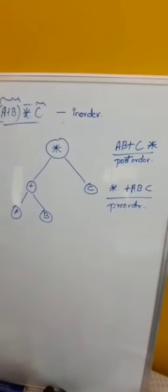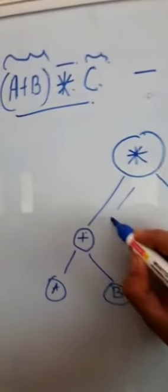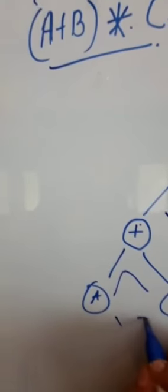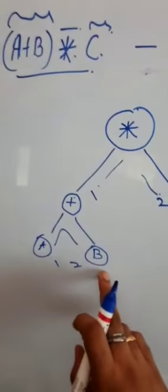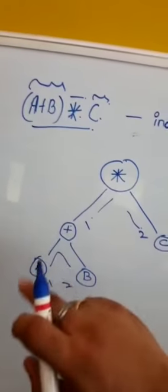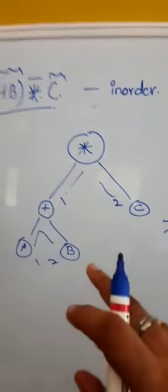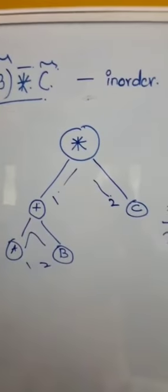To summarize: in all traversals, the left node is considered first, then the right node. The key condition is that all left nodes must be fully traversed before moving to the right side. This method describes how a binary tree is traversed in in-order, post-order, and pre-order formats.